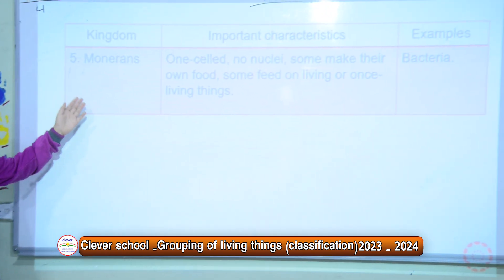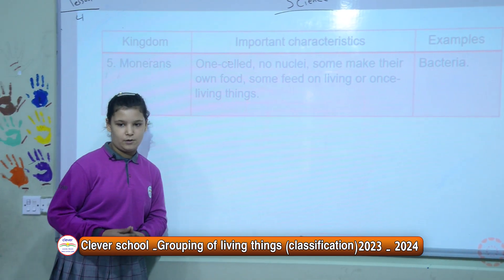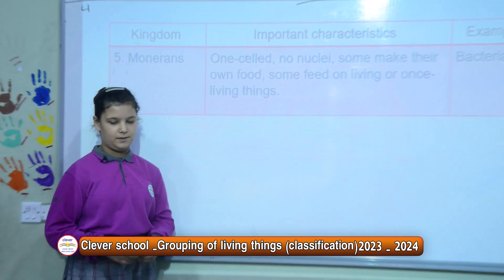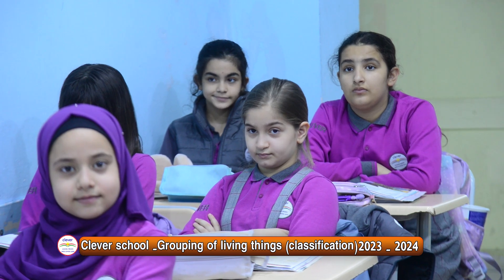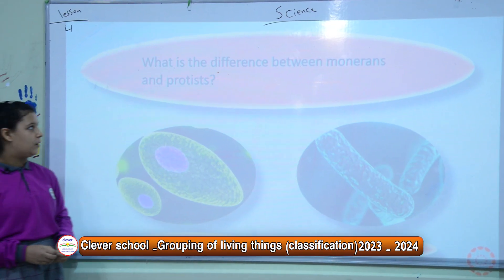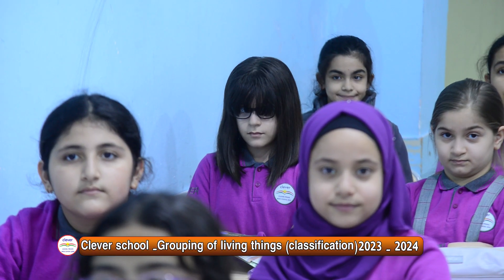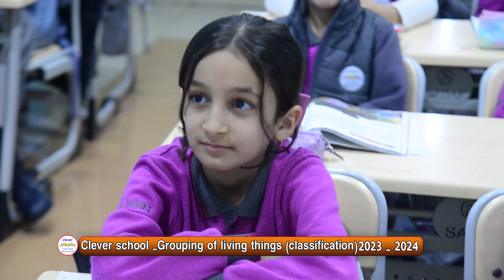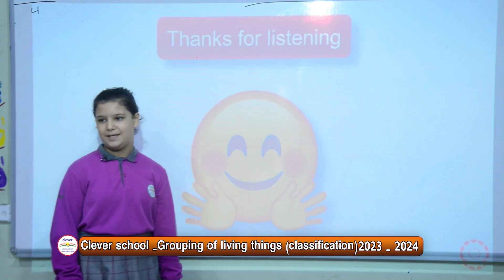Number five, the last one, monerans. They have no nucleus. Some make their own food; some feed on living things or once-living things. For example, bacteria. What is the difference between monerans and protists? Protists have a nucleus, but monerans don't have a nucleus. Thanks for listening.